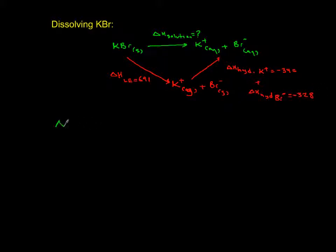So delta H solution of potassium bromide equals the sum of the red arrows: 691 plus -340 plus -328, which gives approximately 23 kilojoules per mole.